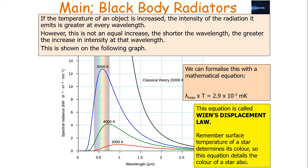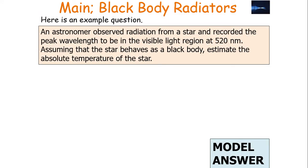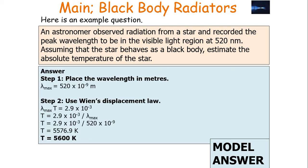Let's look at an example question. An astronomer has observed radiation from a star and recorded the peak wavelength to be in the visible light region at 520 nanometres. Assuming that the star behaves as a black body, estimate the absolute temperature of the star. Step one: convert your wavelength from nanometres into metres. Then use Wien's displacement law — lambda max times T equals 2.9 × 10⁻³. Rearrange to get T as the subject, substitute your values, and you get an answer of approximately 5600 Kelvin.